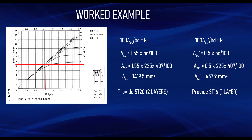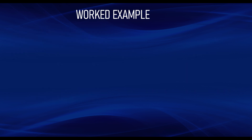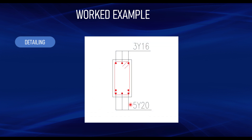This is how to design a doubly reinforced section using the design chart. For the detailing: this is a simply supported beam with 5Y20 at the bottom provided in two layers — three bars in the first layer and two bars on top of it. At the top we have three number 16 mm bars for compression reinforcement. I hope you've learned how to read the doubly reinforced chart according to BS 8110. If you've not subscribed, kindly hit the subscribe button and turn on the notification.